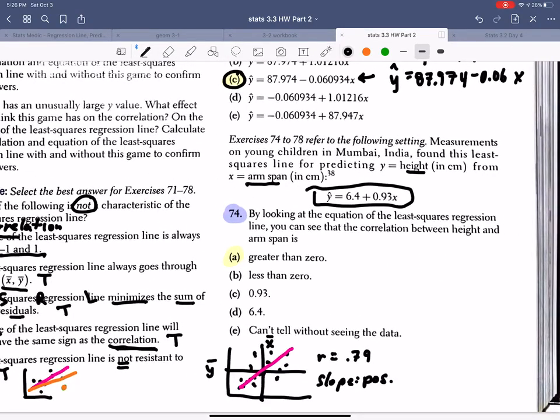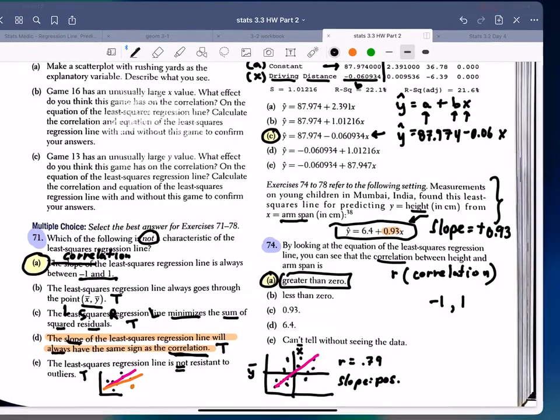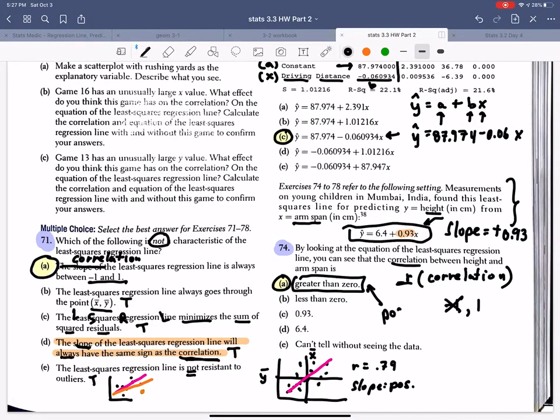Now these set of questions all go together. The same context. It says, by looking at the equation of the least squared regression line, you can see that the correlation is what? So r is what we mean by correlation. And we know that the correlation is between negative 1 and 1. Now notice, we just discovered last time, this is an important bit of information we collected. The slope of a least squared regression line will always have the same sign. So if the slope is, here we identify that the slope is positive 0.93. Then we know that our r has to be greater than 0, which is another way of saying positive. Nice work, guys.